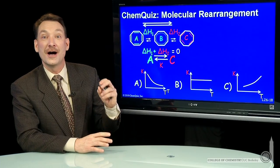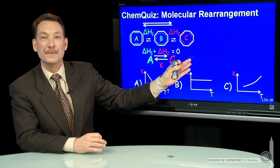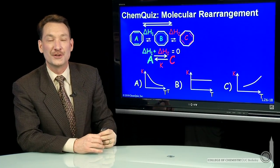We're talking about a two-step reaction. A goes to B, and then B goes to C. The enthalpy for the first step, delta H1. The enthalpy for the second step, delta H2.